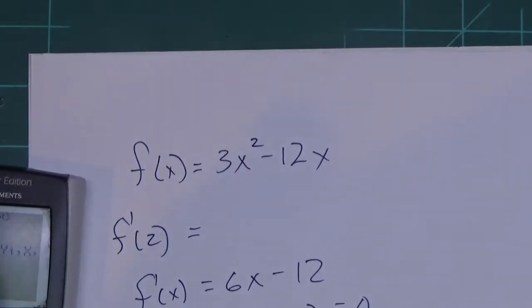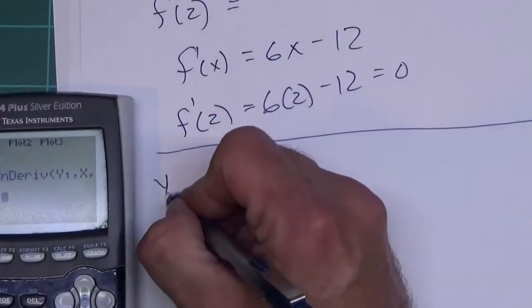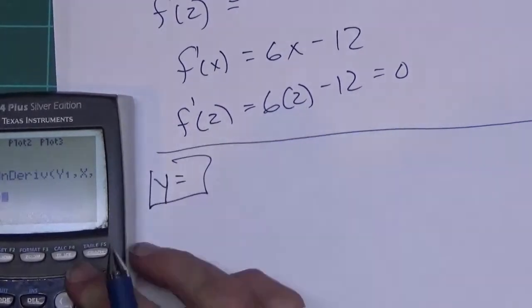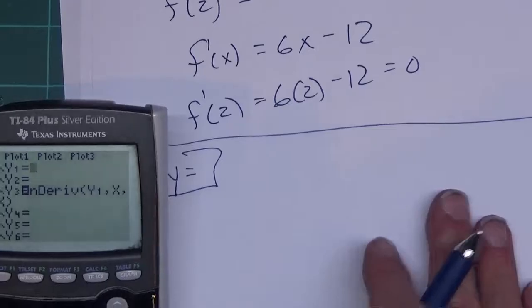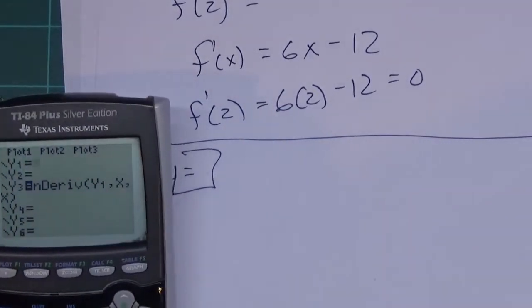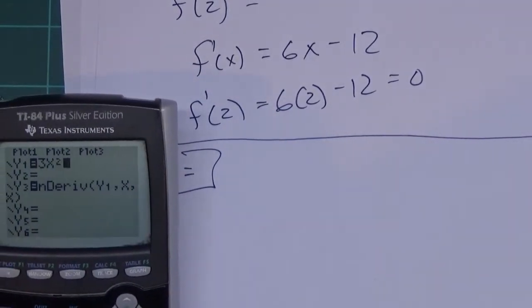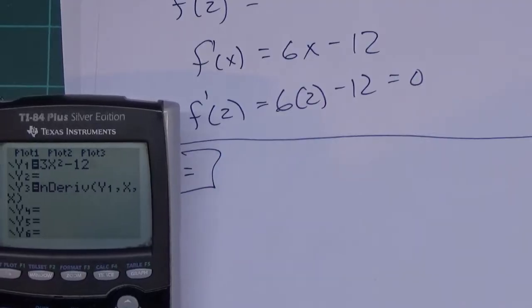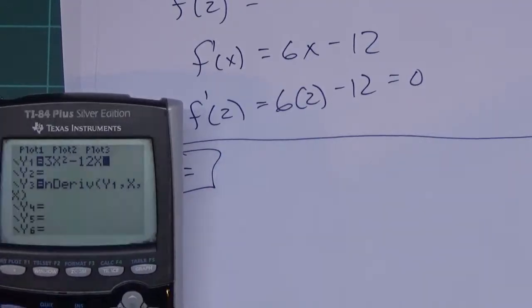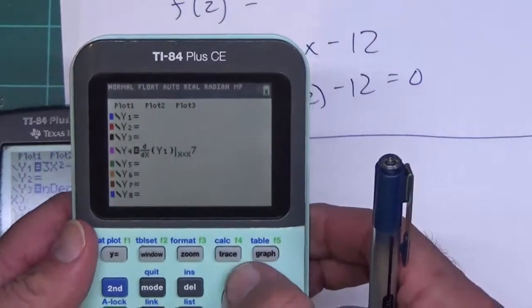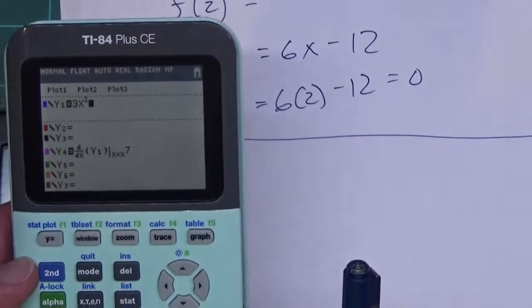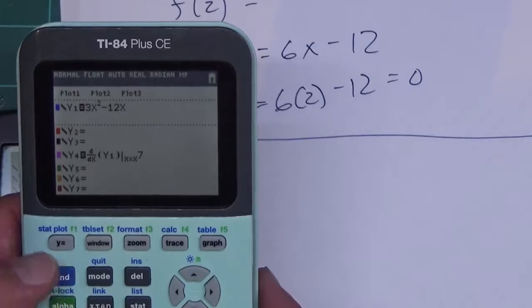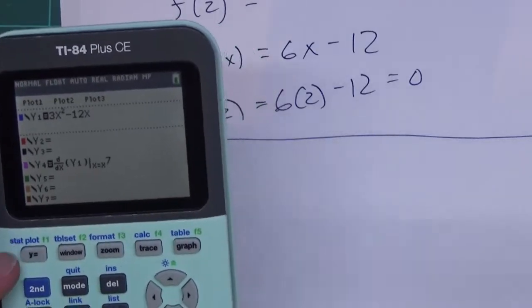Going back, I want to find it for this on both calculators. We already know the answer is 0. So what we're going to do on both is press y equals, go up to y1, and type in that 3x² - 12x. So 3x² minus 12x, and I can do the same thing on this one: 3x² minus 12x.